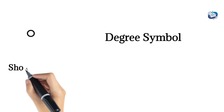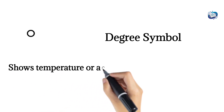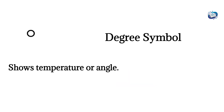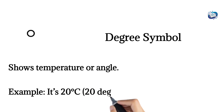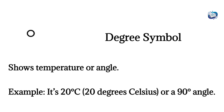Degree symbol. Shows temperature or angle. Example: it's 20°C (twenty degrees Celsius), or a 90° angle.